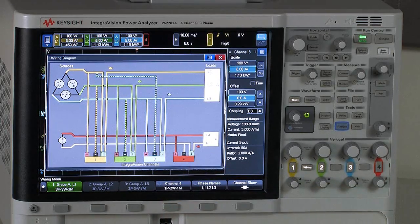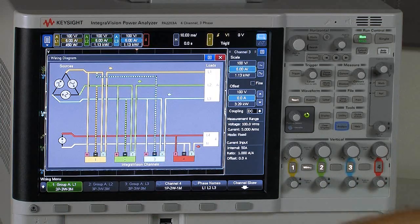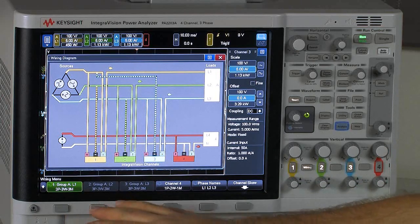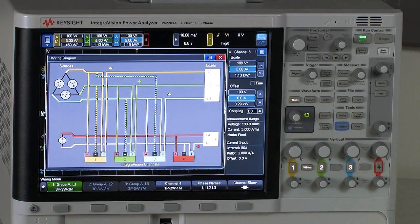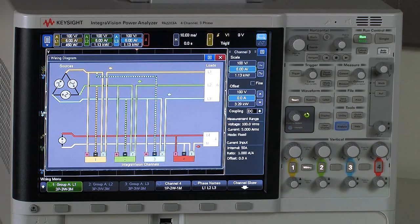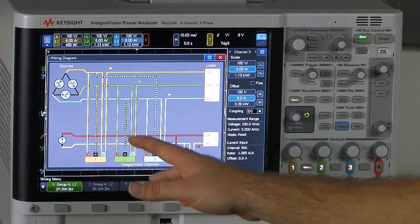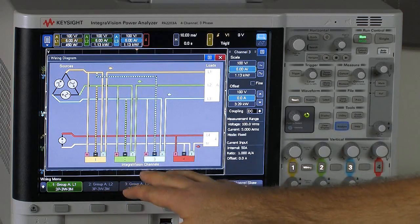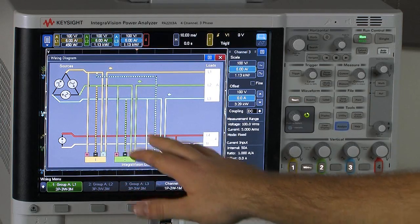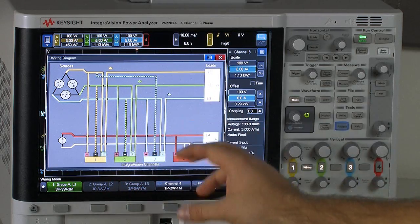So what we can see, two things happened immediately here when I turned this group on, which is called Group A. First, the options for channels two and three are grayed out because channels one, two, and three have been grouped together. And then the other thing is we notice this wiring diagram now has been completely updated to reflect the delta wiring configuration I've chosen.